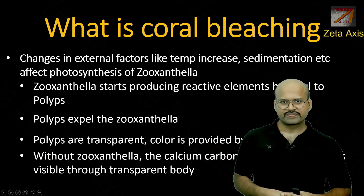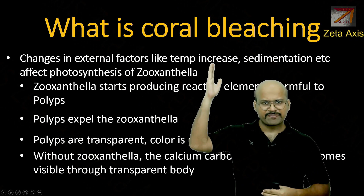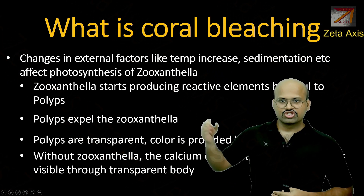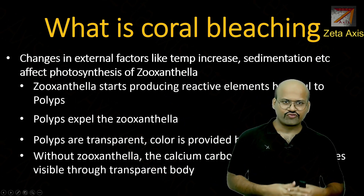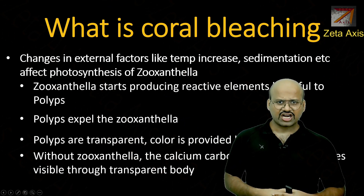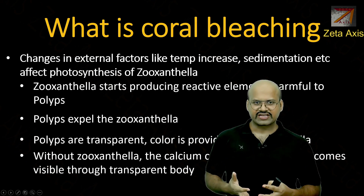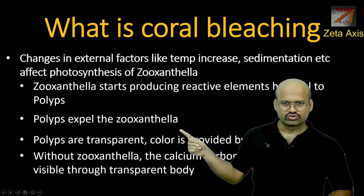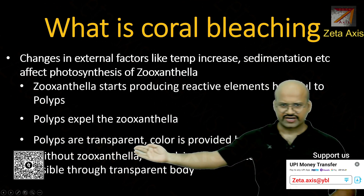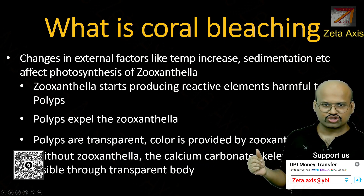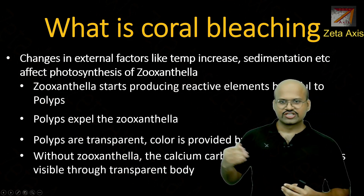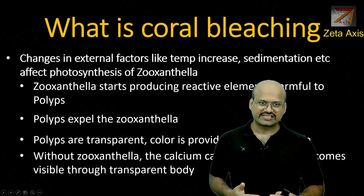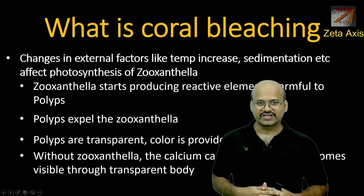Coral bleaching is mainly caused by changes in external factors like temperature increase of the ocean water or increase in sedimentation. The zooxanthellae becomes stressed and is not able to perform photosynthesis properly. Because of this, it starts to emit reactive elements which are harmful to the polyps, and therefore the polyps are forced to expel the zooxanthellae. Since the polyps are transparent and the color is provided by the zooxanthellae pigmentation, when the zooxanthellae is expelled the calcium carbonate skeleton becomes visible and the coral appears white in color.